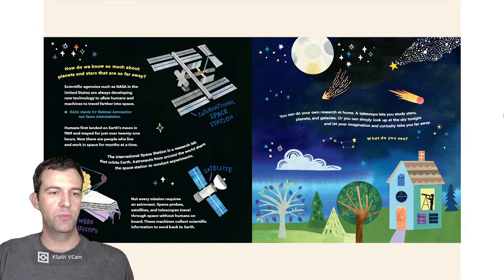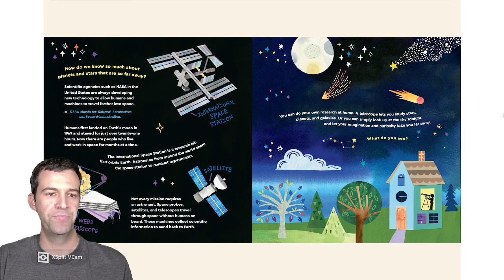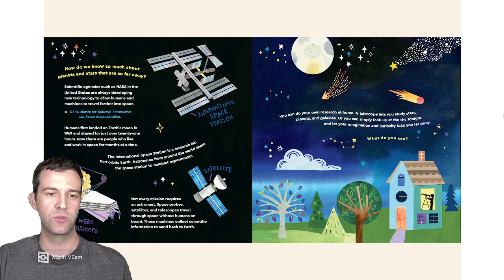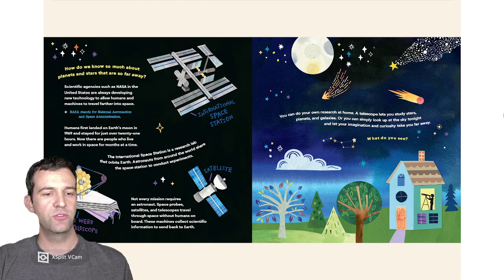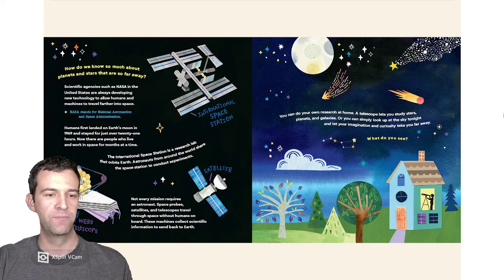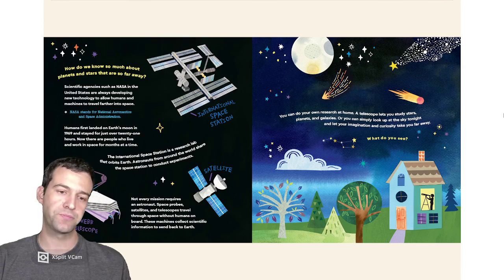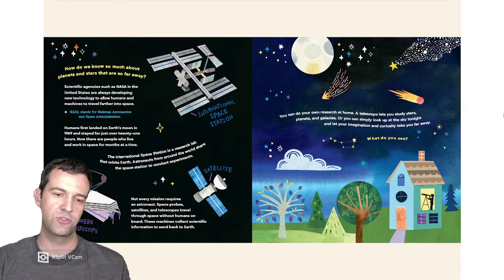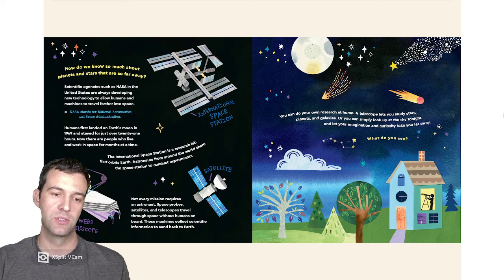How do we know so much about planets and stars that are so far away? Scientific agencies such as NASA in the United States are always developing new technology to allow humans and machines to travel further into space. Humans first landed on Earth's moon in 1969 and stayed for just over 21 hours. Now, there are people who live and work in space for months at a time. The International Space Station is a research lab that orbits Earth. Astronauts from around the world share the space station to conduct experiments.